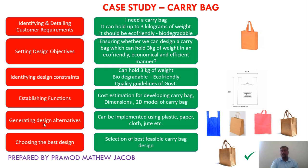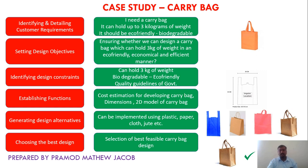Next is generating design alternatives. A carry bag can be implemented in different forms: it can be made of plastic, paper, cloth, or jute. From these alternatives, the designer chooses the best feasible design. The selection is jute — because it can carry 3 kilograms (even up to 10 kilograms), it is biodegradable, eco-friendly, follows government quality guidelines, and is durable. The durability of a jute bag is much better than plastic or cloth bags, whereas plastic is not biodegradable and paper bag cannot hold too much weight. So the best feasible solution is the jute bag.